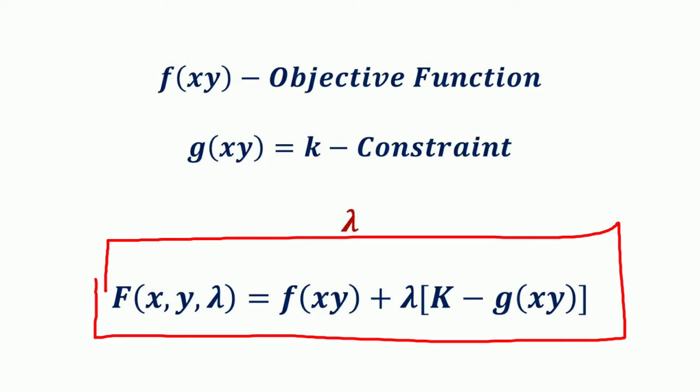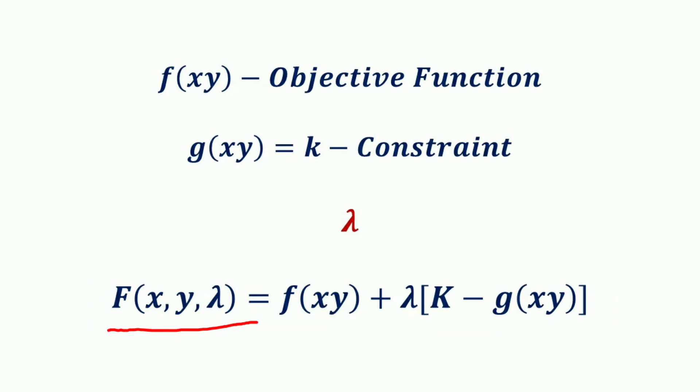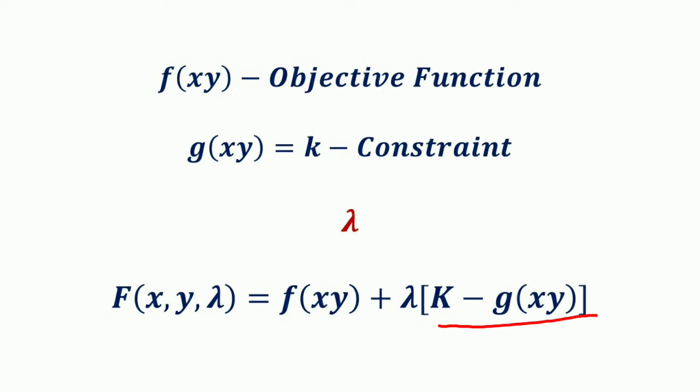Thus the new Lagrangian function is: ℒ(x, y, λ) = f(x, y) + λ(k − g(x, y)), where f(x, y) is the original objective function and g(x, y) is the constraint. Since the constraint is always set equal to zero, the product λ(k − g(x, y)) is also equal to zero, and the addition of this term does not change the value of the objective function.